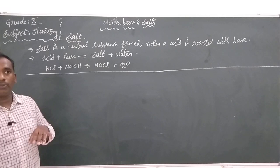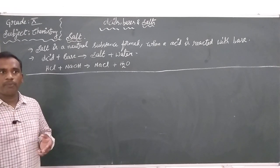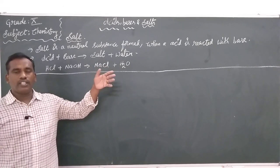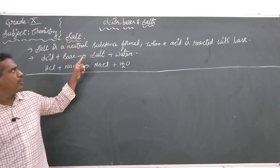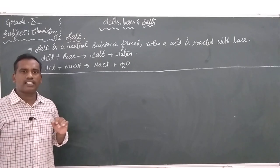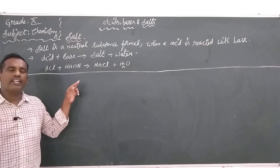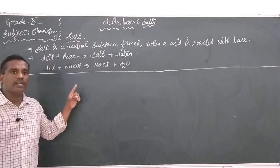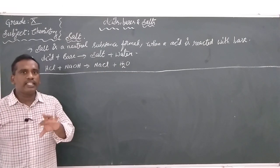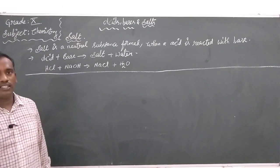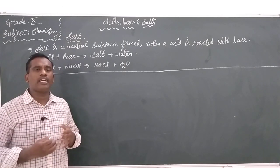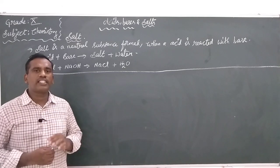It may be a strong acid or it may be a strong base, or it may be a weak acid or it may be a weak base. Salt is a neutral substance formed when an acid is reacted with a base. For example, hydrochloric acid when reacting with sodium hydroxide — acid reacting with a base — the products we got are salt and water.